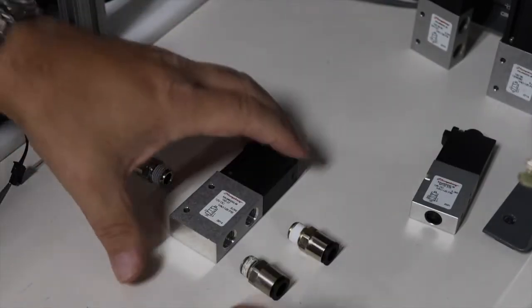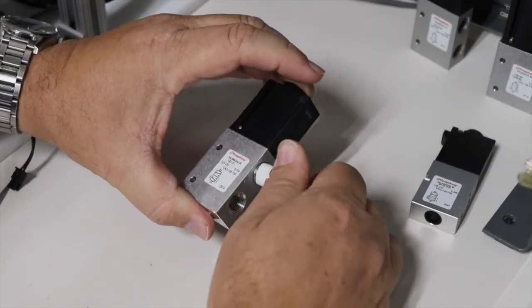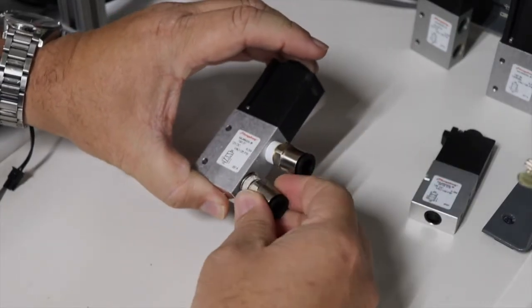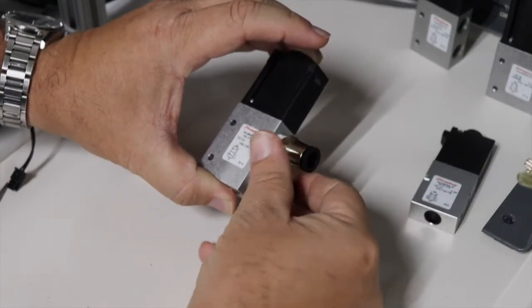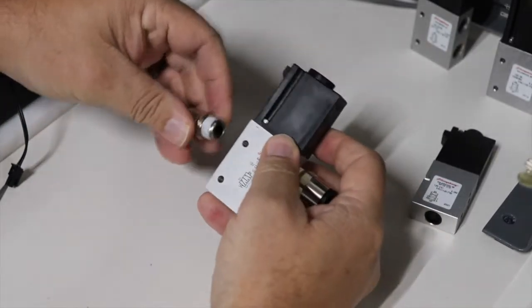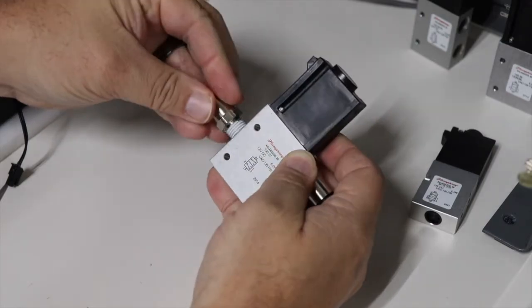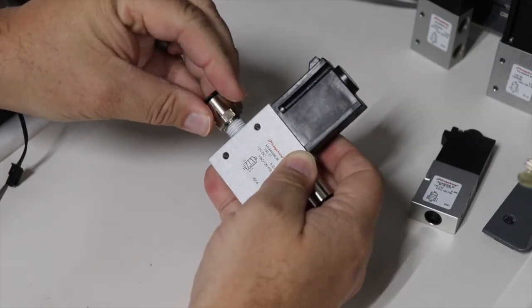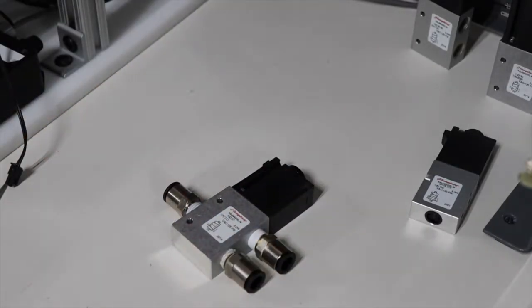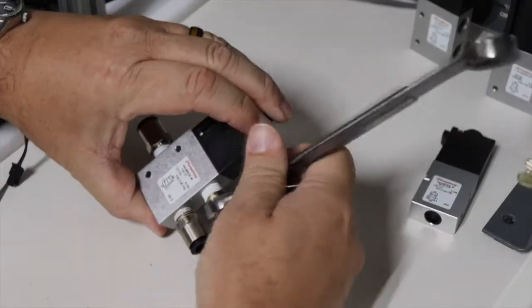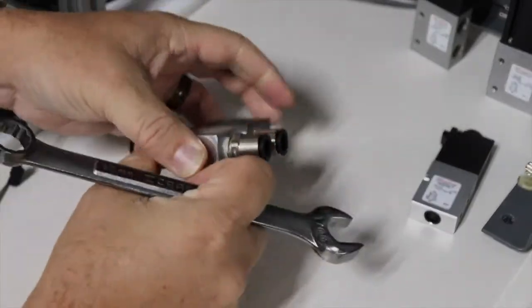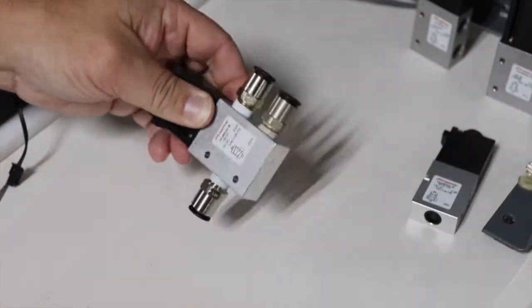When starting the fittings by hand, always feel for unusual resistance from cross threading, contamination, or thread damage. After the fittings are hand tight, use your wrench to finish installation, providing adequate torque to seal the fitting while making sure the appropriate thread engagement and torque levels are met. Please consult the manufacturer or industry guidelines to make sure fittings are adequately and appropriately safely torqued in the valve.